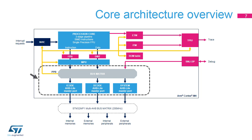The Cortex-M4's bus matrix is connected to the STM32MP1 multi-AHB bus matrix, enabling the CPU to access memories and peripherals. Since transactions are pipelined on AHB-Lite, the best throughput is 32 bits of data or instructions per clock, with a minimum 2-clock latency.